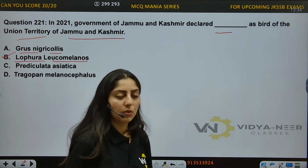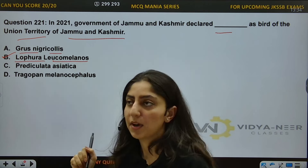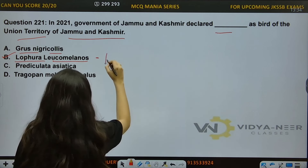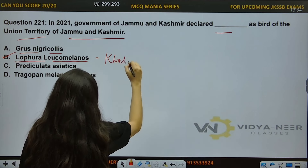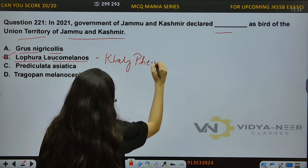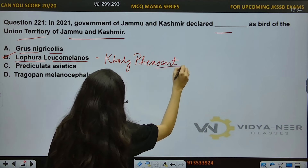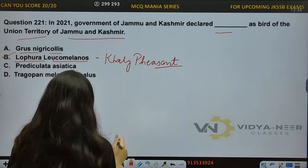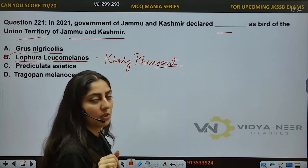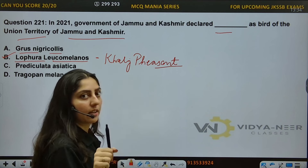What is this basically? This is the biological name of our bird that has recently been declared. Who has done this? Our Khalij Pheasant. If we have talked about UT of J&K, this is about J&K UT — this is not about Ladakh UT. It is different from Ladakh UT.